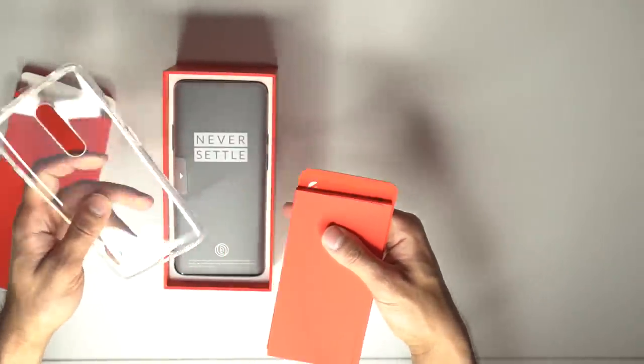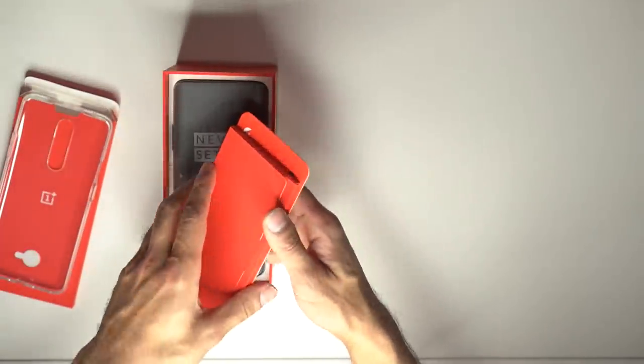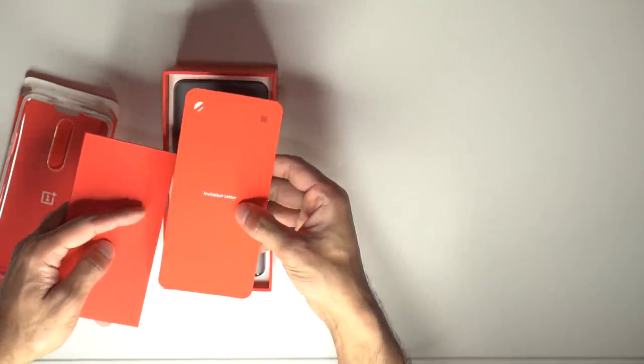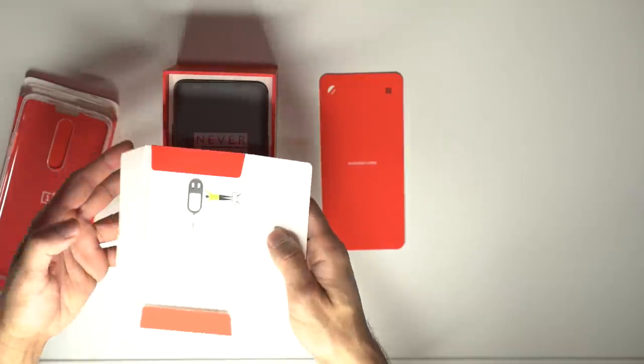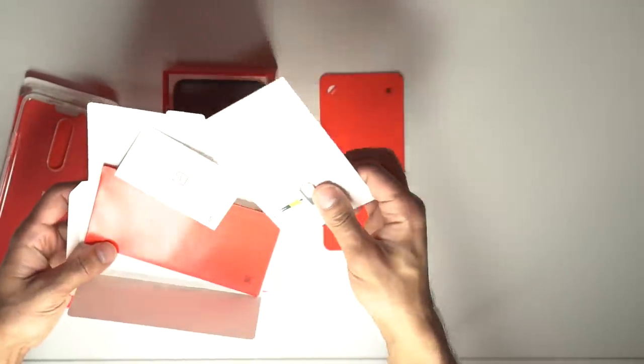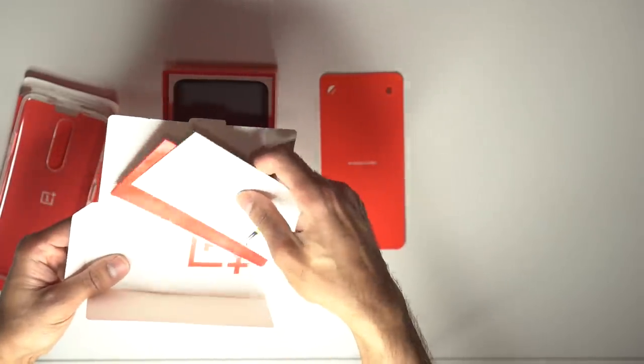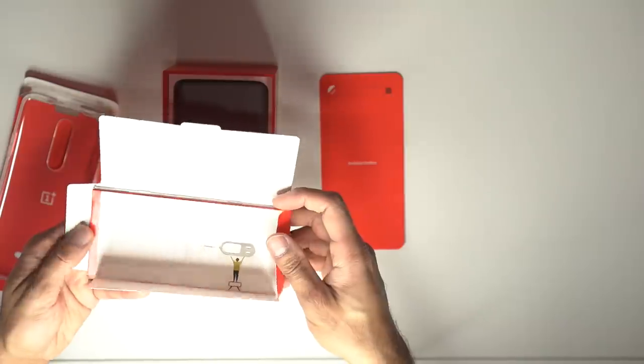You have the clear silicon cover for the phone. You've got the invitation letter as well that comes with it, and then also the SIM card tray opener there as well. They usually send stickers - yep, they have some there, and you've got some there at the bottom as well. So that's pretty cool.